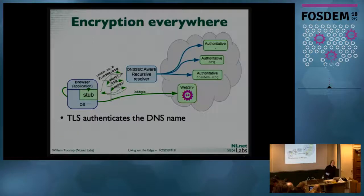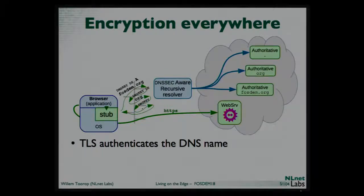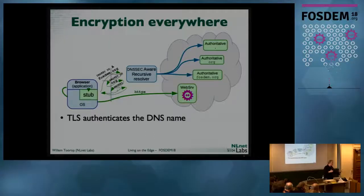Every initiative for an encrypted connection starts with the lookup of an address. To be sure you connect to the actual correct endpoint, you have to make sure the address is correct. DNSSEC can provide origin authentication — a method to verify that the answer to your DNS query is indeed coming from the owner of the domain name. The standard was made for the recursive resolver, but if you want end-to-end encryption from the very edge to the service, we have to do DNSSEC validation at the stub resolver.